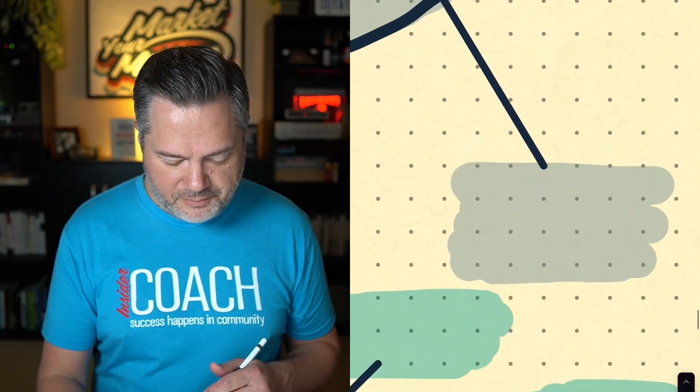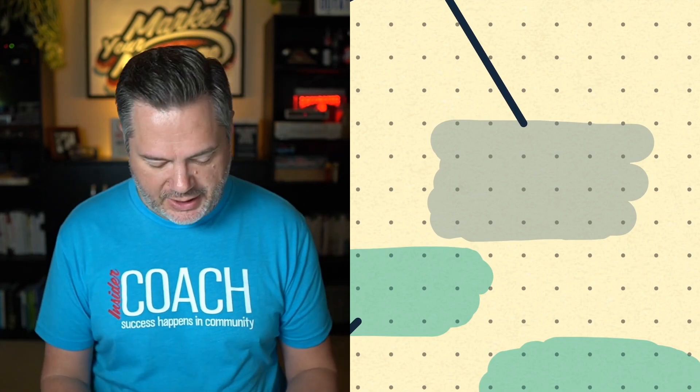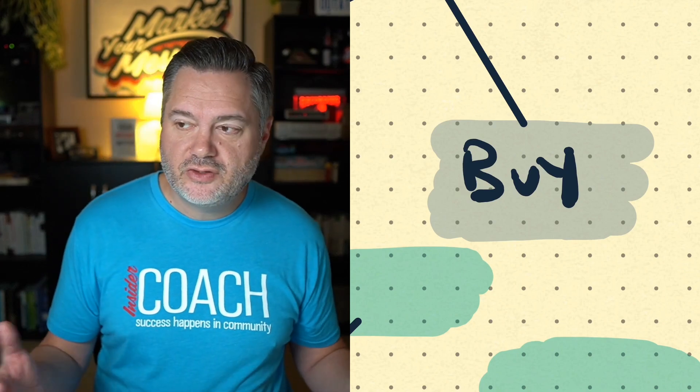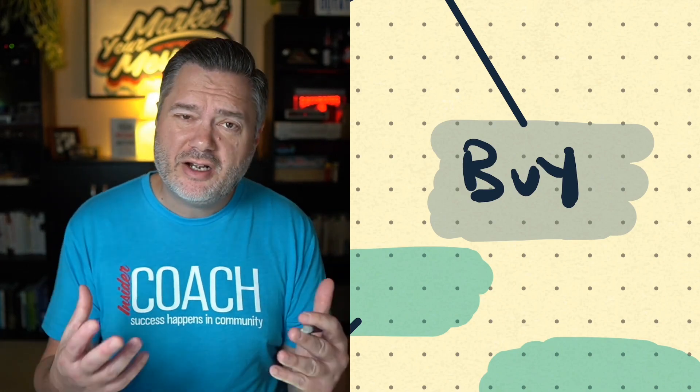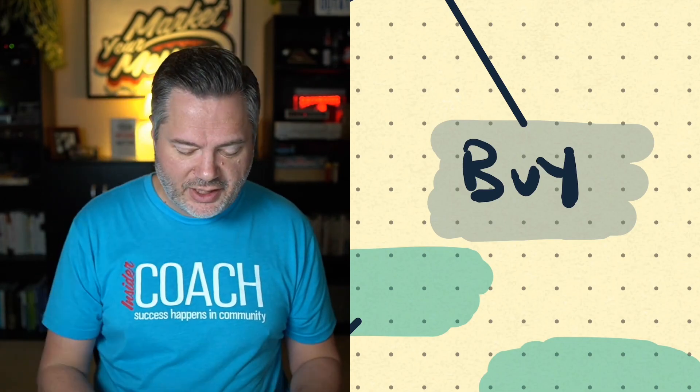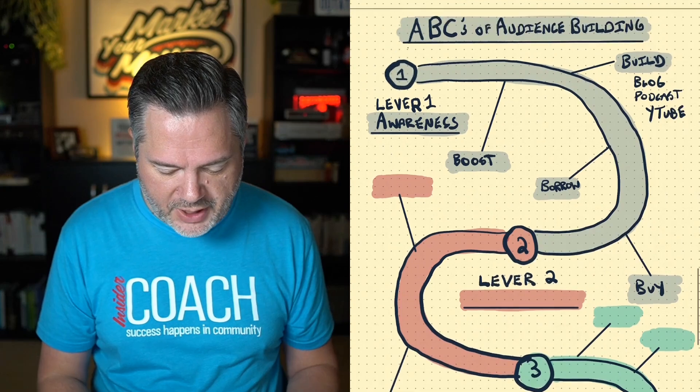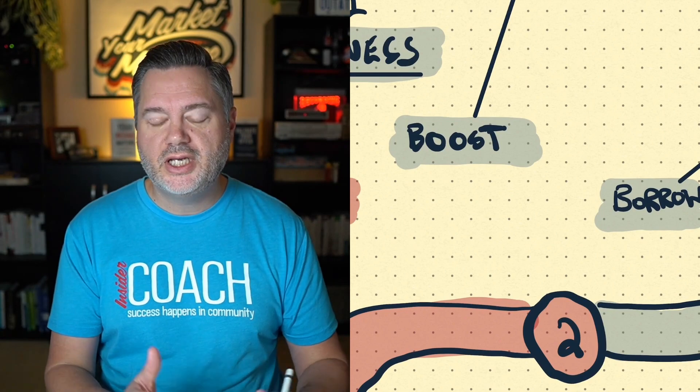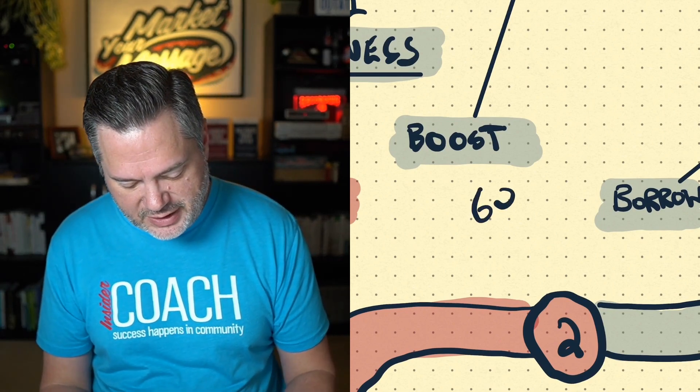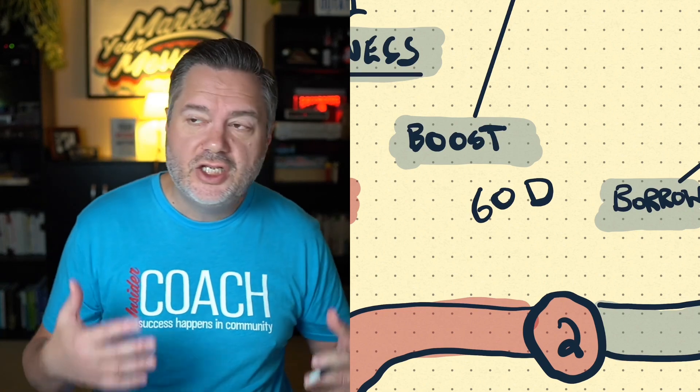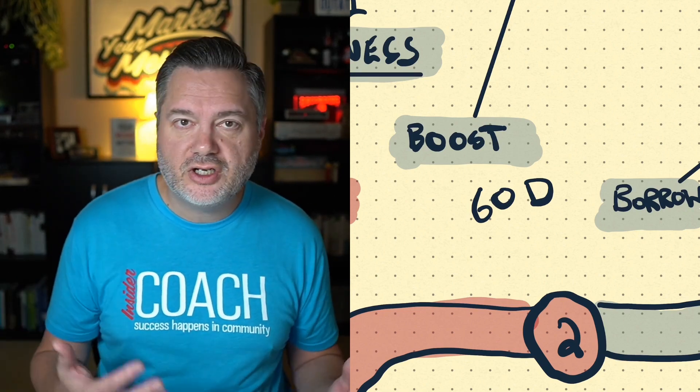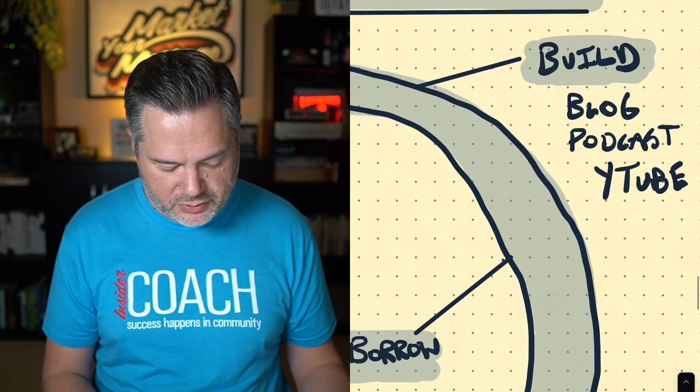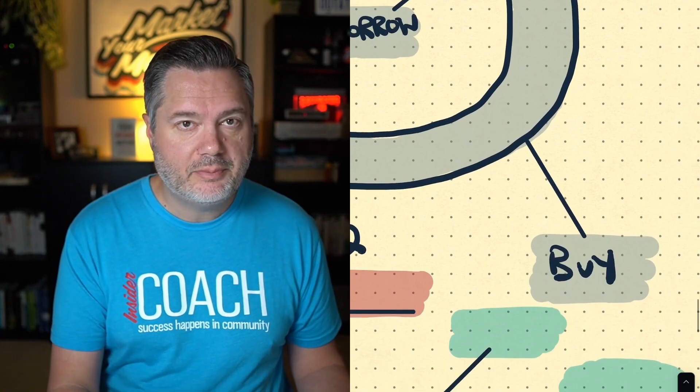And then the fourth one, number four, we've got buy. So you can use Facebook ads. You can turn on the traffic right away. You can create awareness just like that. And so these are the primary four methods that you want to think about. You don't have to do all four. In fact, I encourage you to choose one and do that for 60 days. That's what the book's all about. Choose a traffic method and decide you're going to go all in for 60 days, whether that's boost or it's build or it's borrow or even buy.